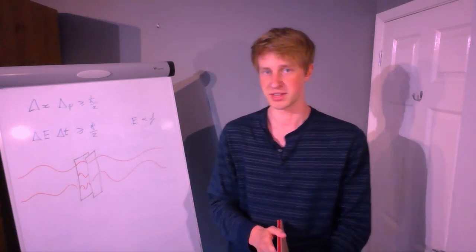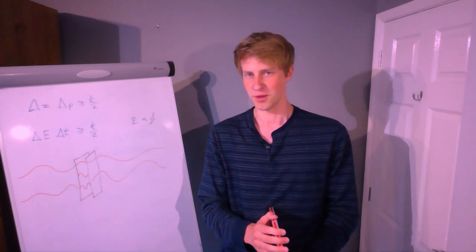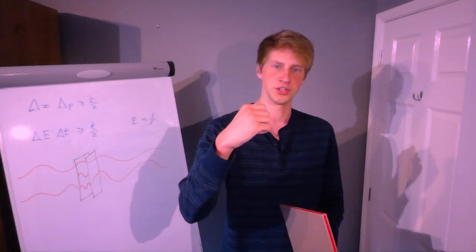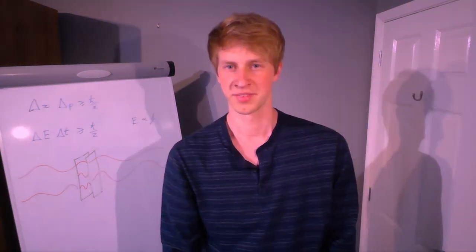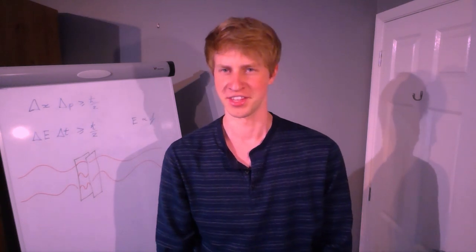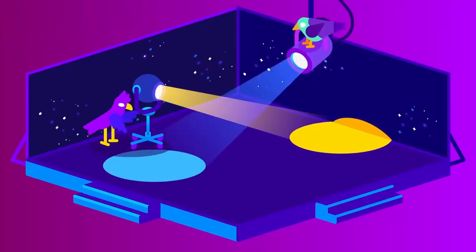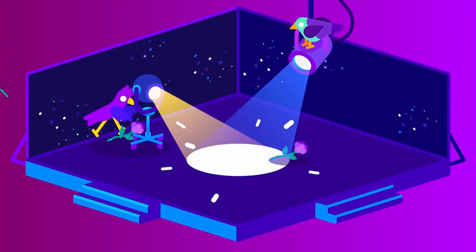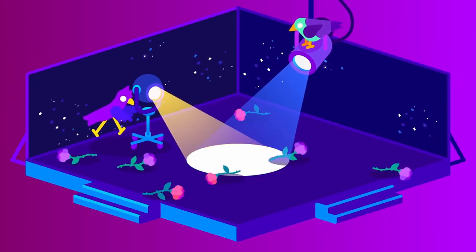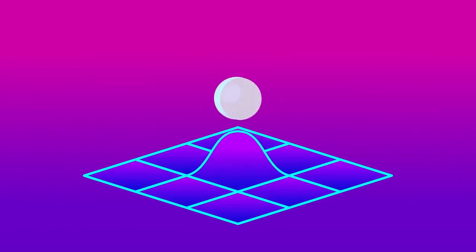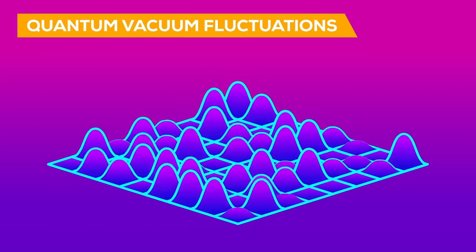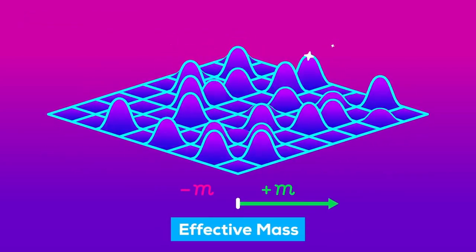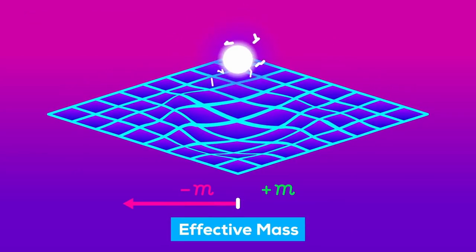I originally found out about this because I watched a video by Kurzgesagt in which he talks about how you could use negative mass or negative energy density to open a wormhole. He says something like: 'We may even have a candidate for this exotic matter, the vacuum of space itself. Quantum fluctuations in empty space are constantly creating pairs of particles and antiparticles, only for them to be annihilated an instant later. The vacuum of space is boiling with them, and we can already manipulate them to produce an effect similar to the negative mass we're looking for.'